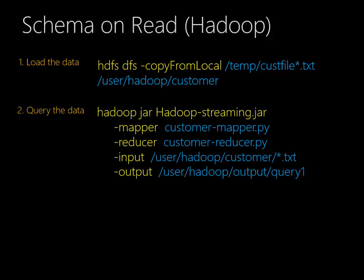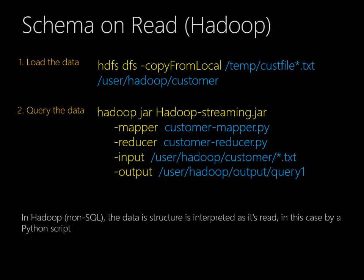Then we would immediately go to querying the data — this is a command we might use to query a customer table like this one. The significance of this is we never really created a schema at all. In Hadoop, the data structure is interpreted as the data is read. In this case it's a Python script — the data schema is whatever the mapper decides it is. So as we load data, we don't have to be as concerned about its layout, its structure, or even if it will change in the future. We can adjust for that within the mapper script. If we're analyzing data and discover a different way of interpreting it, we can just change the script — we don't have to reload the whole data warehouse.